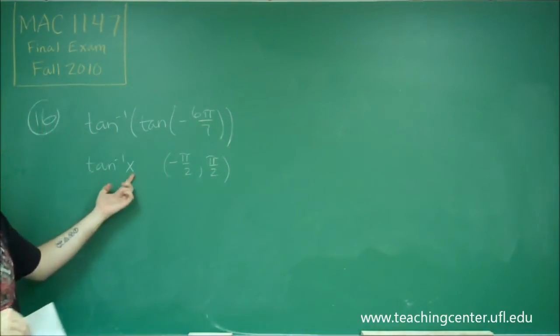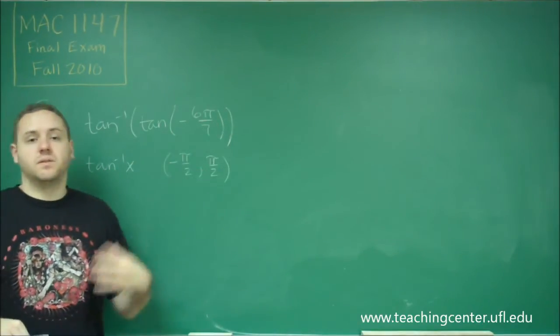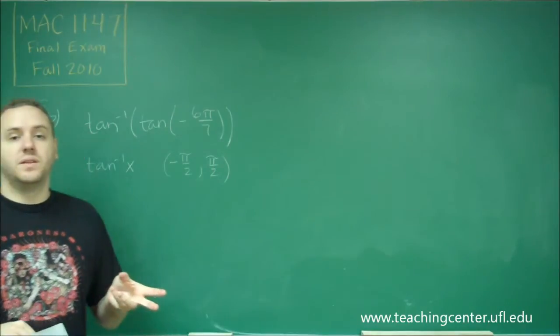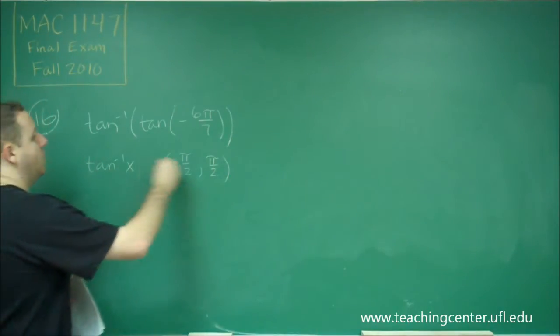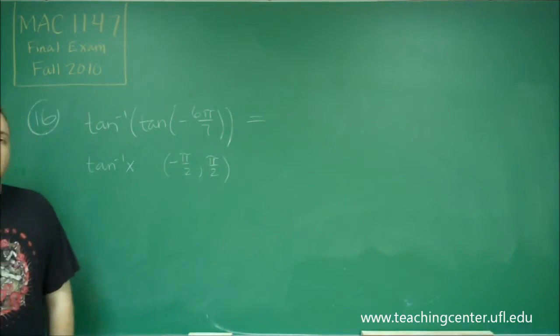It can take any value to put in, which is whatever tangent of negative 6 pi over 7 is, which is not some common thing that you know. However, the answer here can only be in between negative pi over 2 and pi over 2.